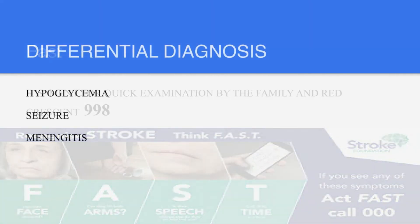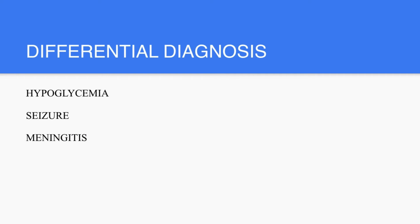The differential diagnosis of stroke includes hypoglycemia, seizure, meningitis, and space-occupying lesions — among the most important differentials to consider. There is a long list that can be found in your textbooks.